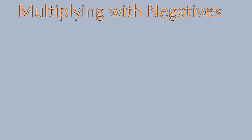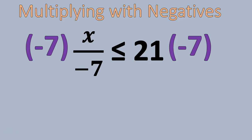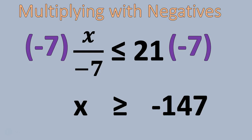The third situation where you would change the inequality sign is if you're multiplying by negatives. For example: x divided by negative seven is less than or equal to 21. To solve this inequality, you multiply both sides by negative seven, since that is the inverse operation. That gets x by itself on the left of the inequality, and 21 times negative seven gives negative 147 on the right. Notice the symbol has changed from less than or equal to, to greater than or equal to, because I multiplied by a negative number.